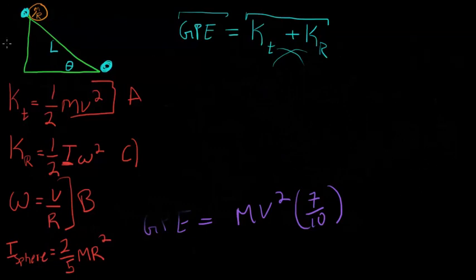It's asking, write an expression for the speed V at the bottom of the incline in terms of only L, G, and theta. So, we're only allowed to use L, G, and theta. Now, you're like, okay, whoa, how are we going to get that? Because we don't really need L. L doesn't really do a lot for us when speaking in terms of energy, but we can use L and theta.